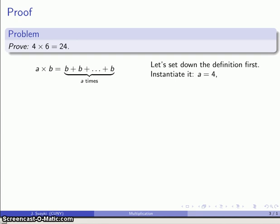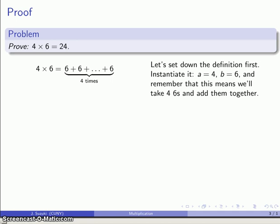And now we'll compare our problem to our definition. We see that a is 4. I'll go ahead and replace that. b is 6. I'll go ahead and replace that. And then I have the statement 4 times 6 is 6 plus 6 plus 6. And I'm going to take four sixes and add them together.